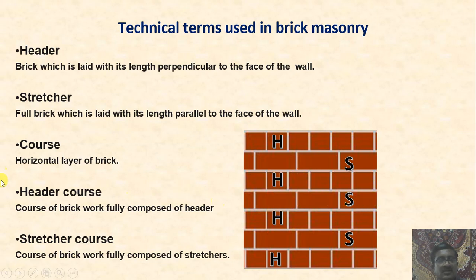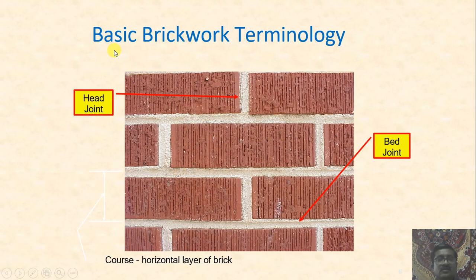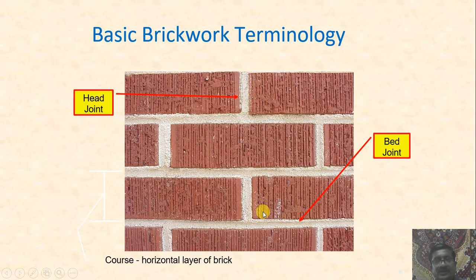A header course is a course of brickwork fully composed of headers. You can see in the diagram that there are header courses and stretcher courses alternating. In the brick joints, the vertical joint is called a head joint, and horizontal joints are called bed joints.